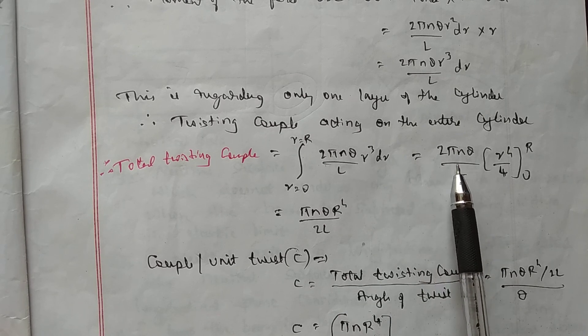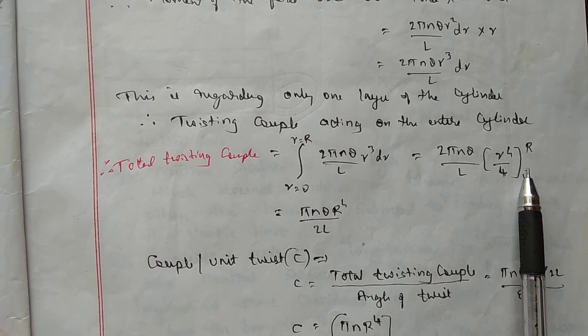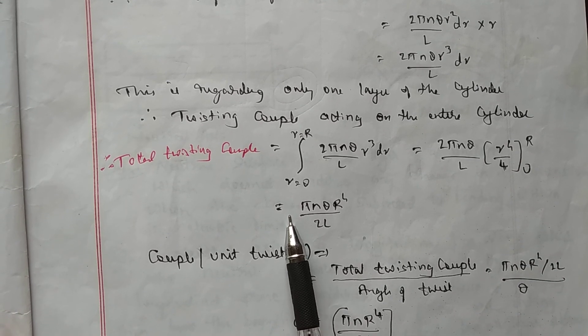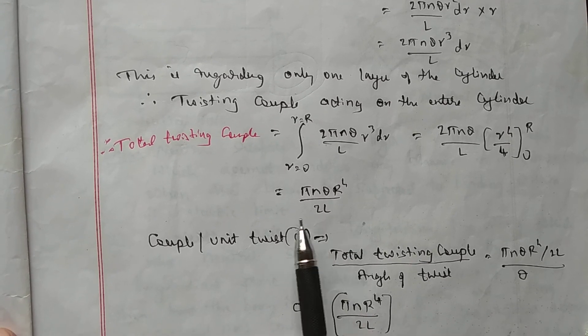Integrating, we get 2 pi N theta by L into R raised to 4 by 4. Simplifying, we get pi N theta R to the fourth by 2L. This is the total twisting couple.